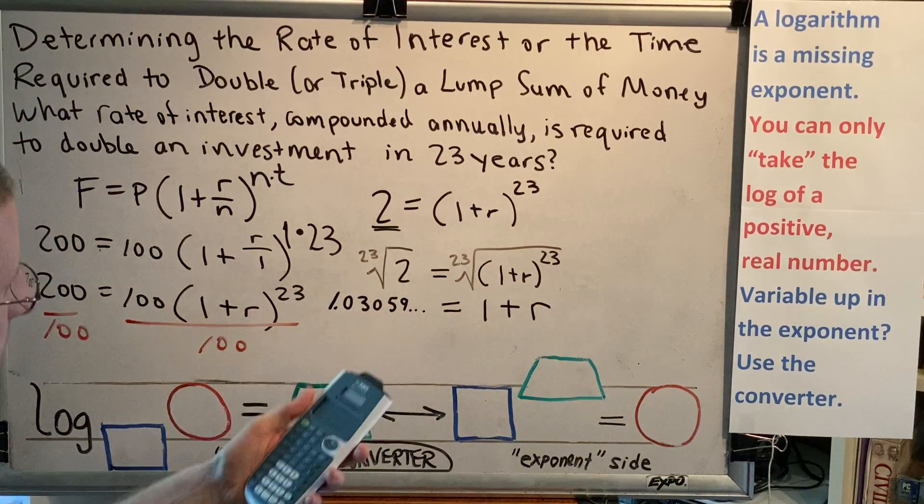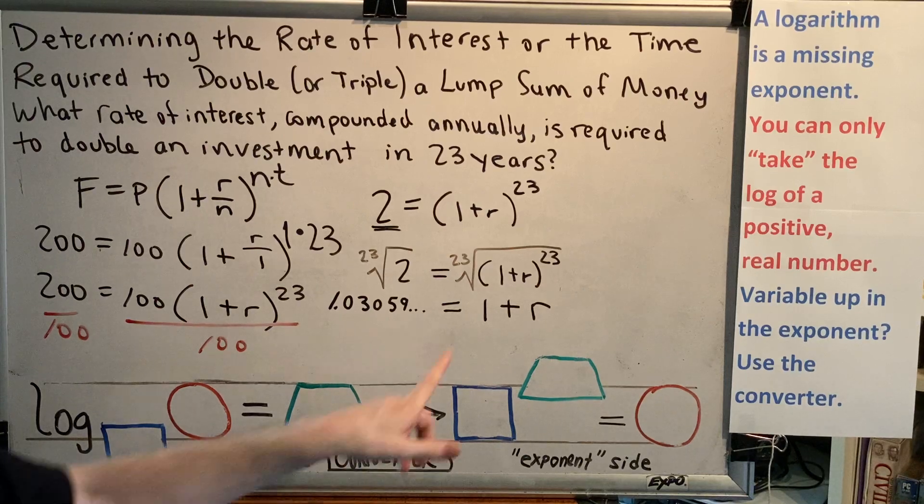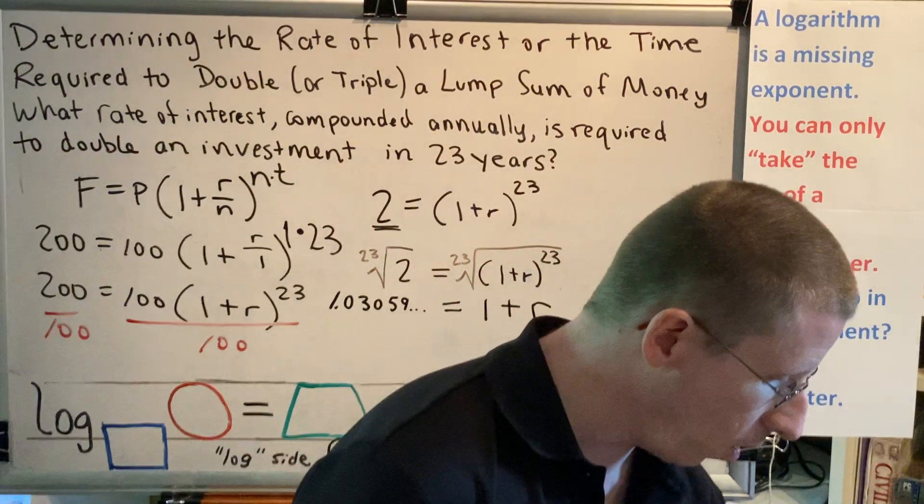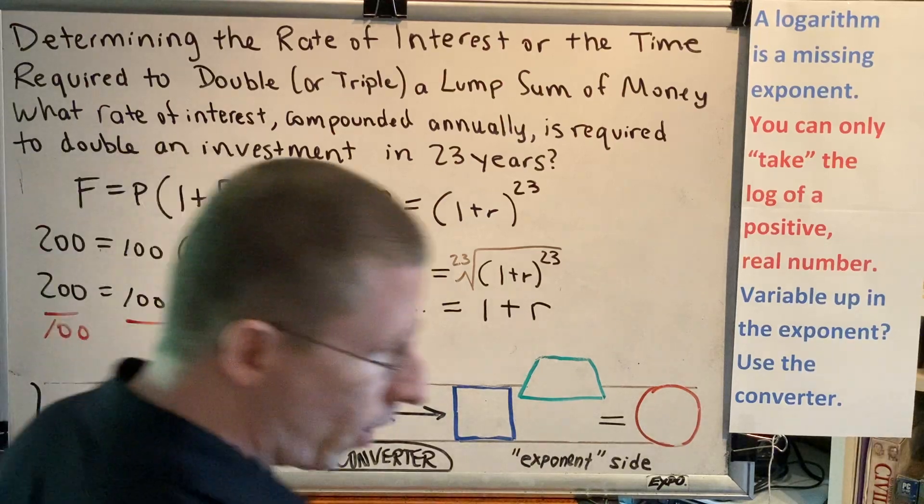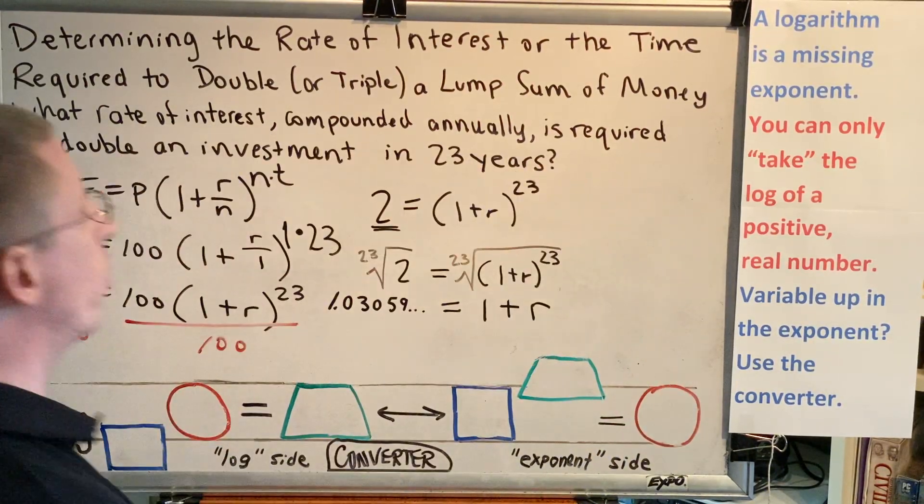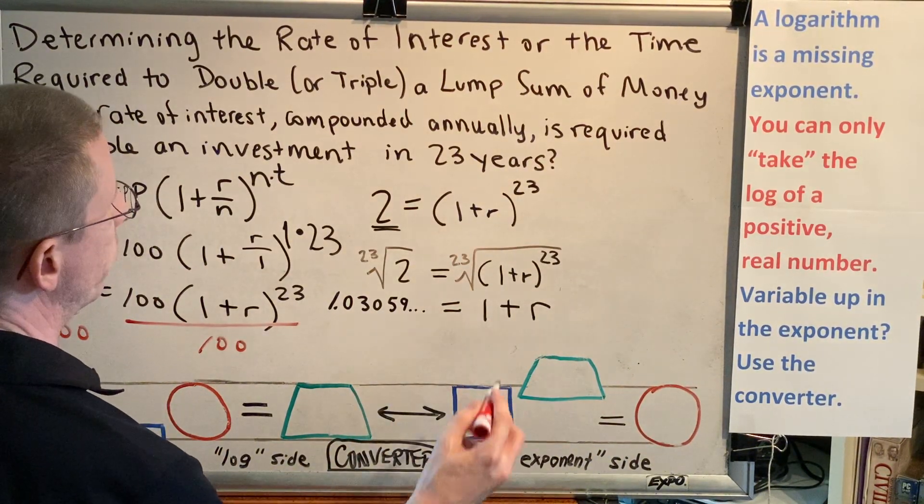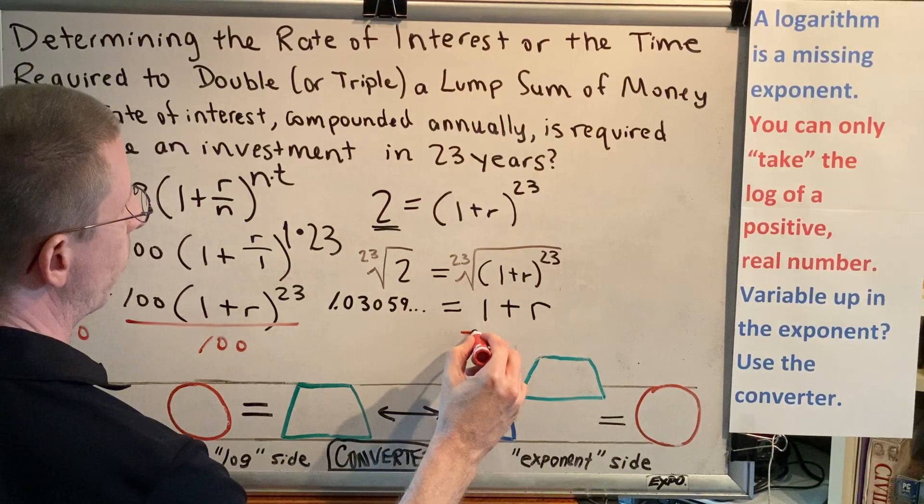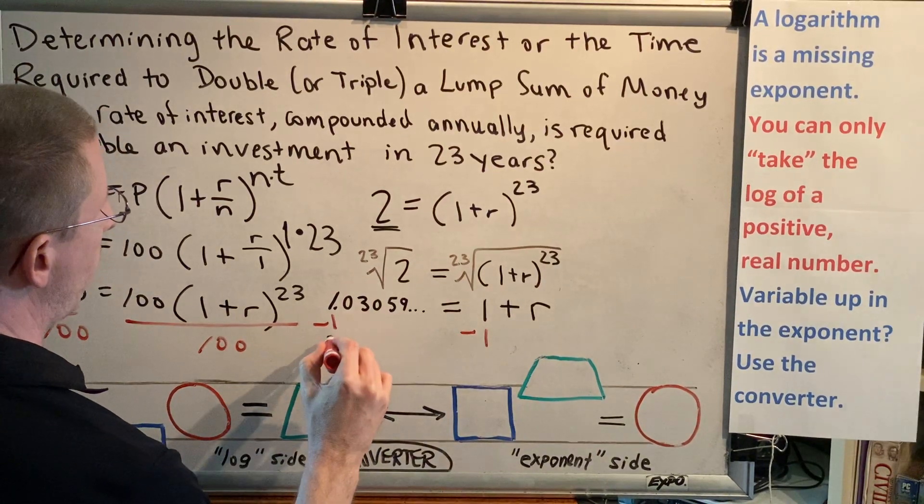Now remember, this is the left side of our equation. The right side still says 1 plus R. What we need to do now is subtract 1 on both sides, because we don't want to know what 1 plus R equals, we just want to know what R equals.